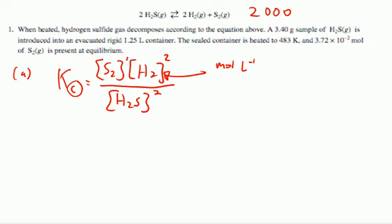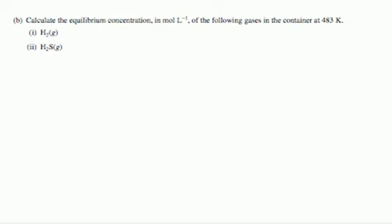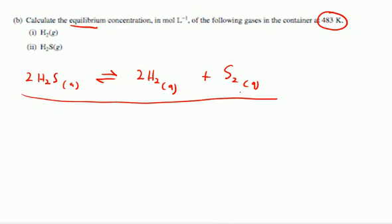We're going to go on to question B. It asks us to calculate the equilibrium concentration in moles per liter of the following gases at 483 K. So what I'm going to do now is begin to establish my ICE chart. I'm going to rewrite the reaction as 2H2S gas at equilibrium goes to 2H2 gas plus S2 gas. Before I even read anything, I'm going to set up my ICE chart. Now remember, ICE stands for initial, change, and equilibrium. So I'm going to start trying to fill this in as I can.